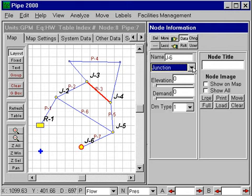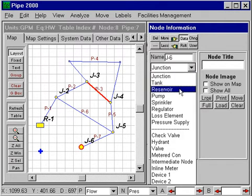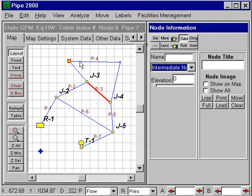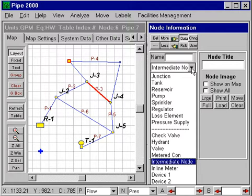I'll change this node to a tank. I could change an intermediate node here to a valve.